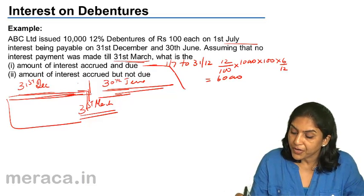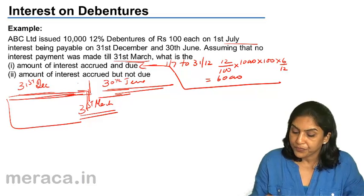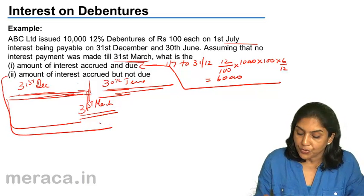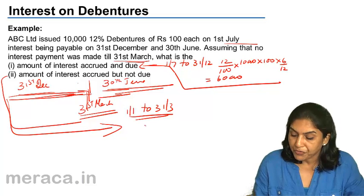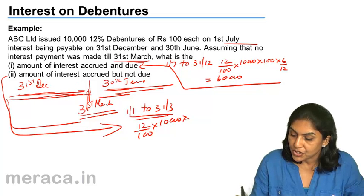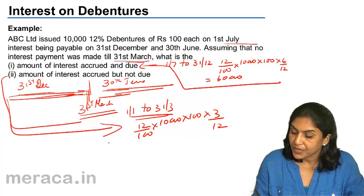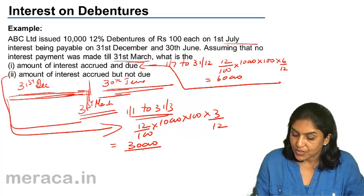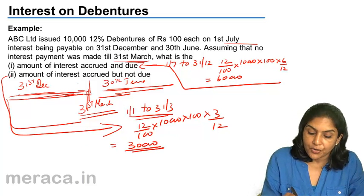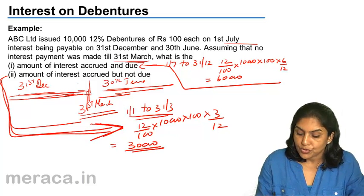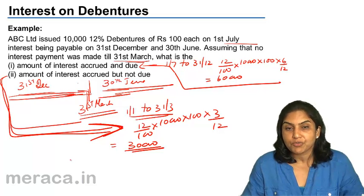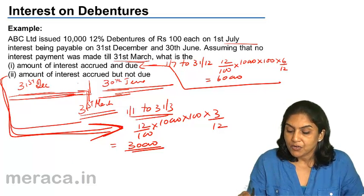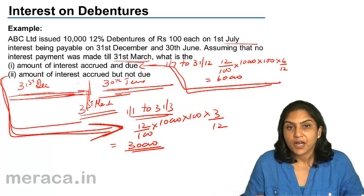So ₹60,000 is the amount of interest accrued and due. What is the amount of interest accrued but not due? From 1st January to 31st March is the amount of interest, that is 3 months interest: 12% of 10,000 debentures of ₹100 each for 3 months. This would be equal to ₹30,000. So 3 months interest — January, February and March — is interest accrued but not due. And the amount of interest accrued and due is the 6 months interest from 1st July to 31st December, amounting to ₹60,000.